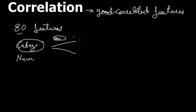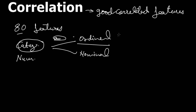In categorical variables you have two types: ordinal and nominal. Ordinal features are those that have some order — for example, ratings: one star, two star is greater than one star, three star is greater than one star. Though it is not continuous, you can say that it has some order.